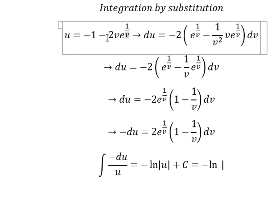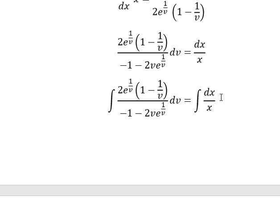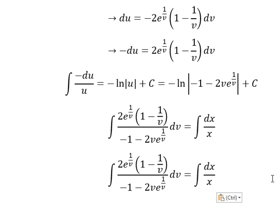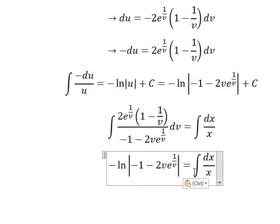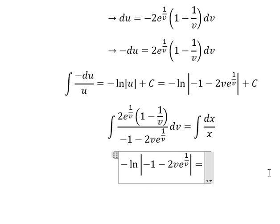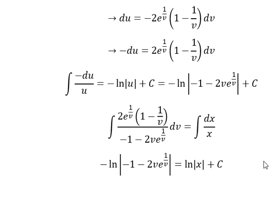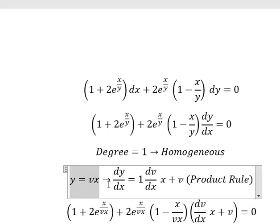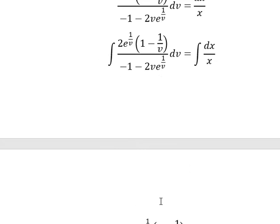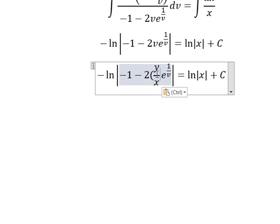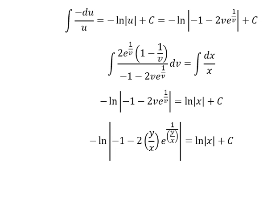Recall that u equals this expression. Now we go back and substitute. The integral on the left side equals this expression, and the integral on the right side equals ln of the absolute value of x, plus constant C. Recall that v equals y over x. We divide both sides by x and change v back into y over x to get our final answer. This is the end — thank you for watching.